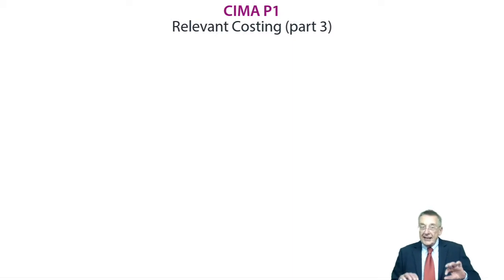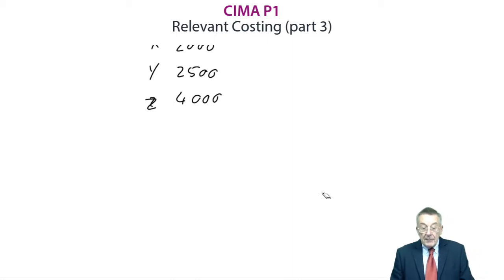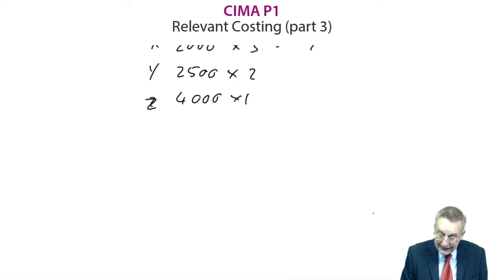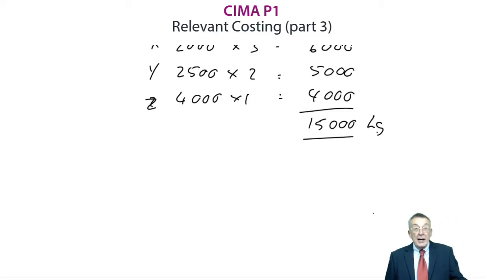Clearly we would want to produce to meet demand. But if we did, then X needs 2,000 units, Y 2,500, Z 4,000. But how much material do we need? X needs three kilos per unit, Y needs two, Z needs one. And therefore, we'd need a total of 15,000 kilos. And there's where the limit becomes relevant. We've only got 8,000 kilos. We can't possibly, therefore, produce to meet demand by ourselves.